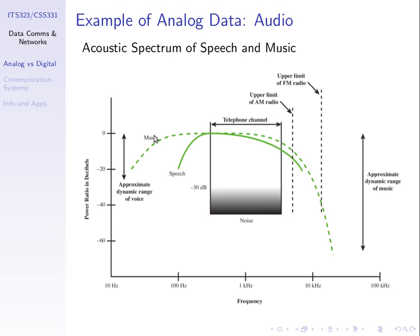Music has a higher range of frequencies than our voice, and our ears can pick that up. Some very low frequencies in music are not used when we speak. Speech and music are both examples of analog data.